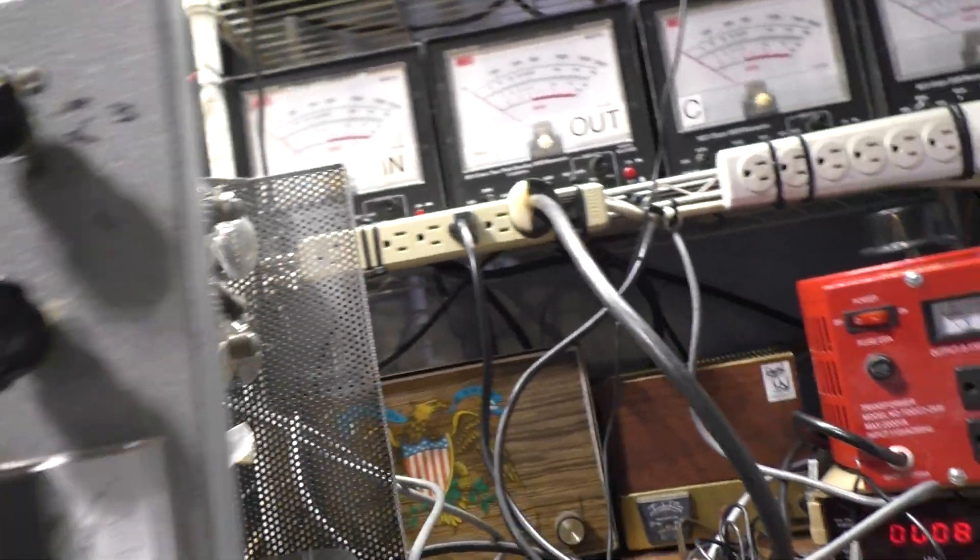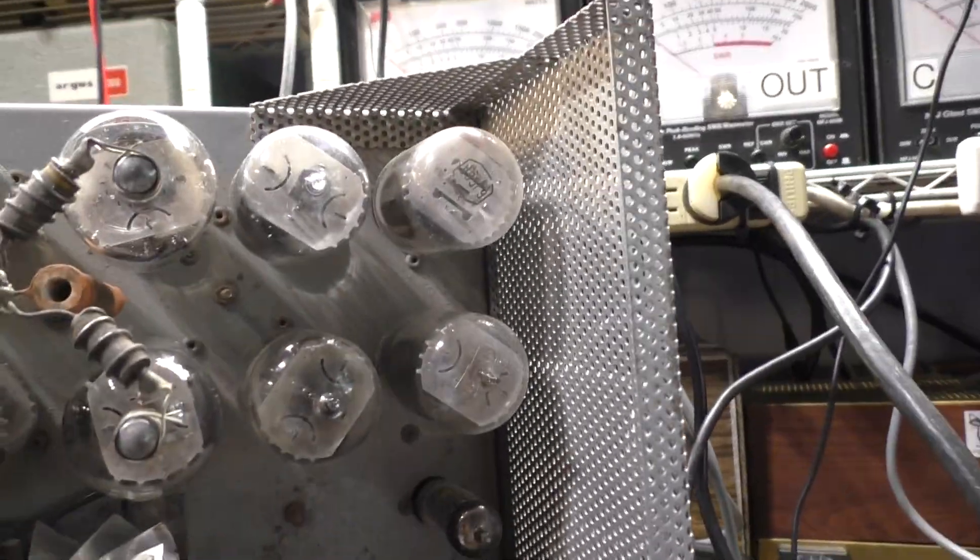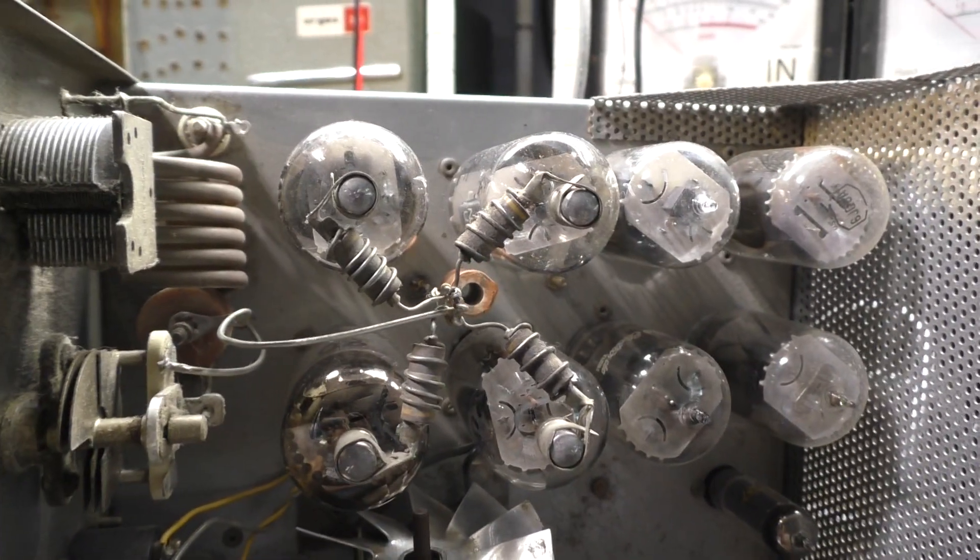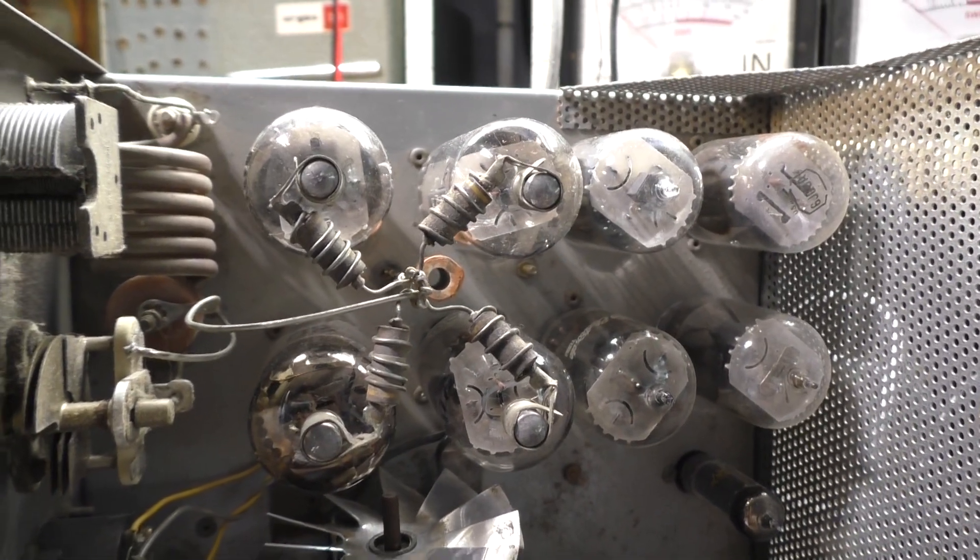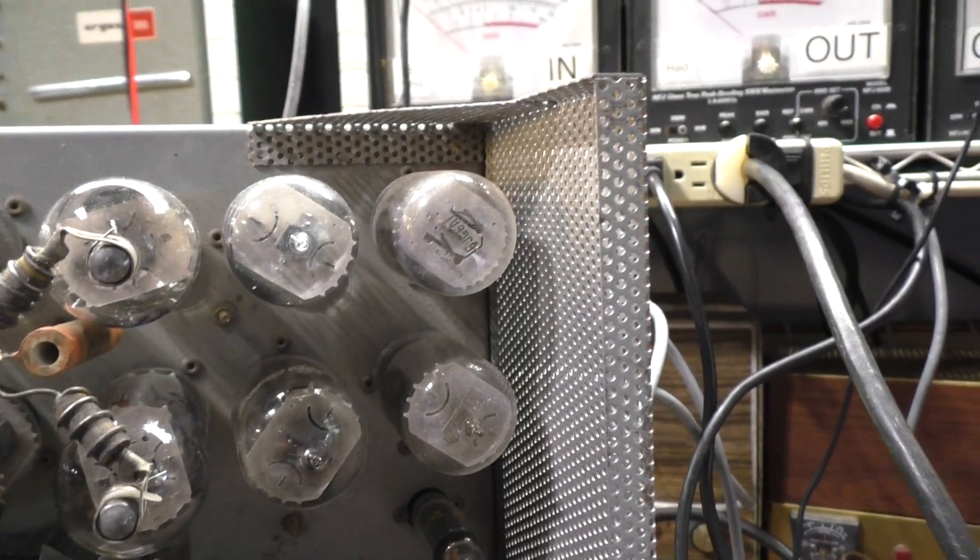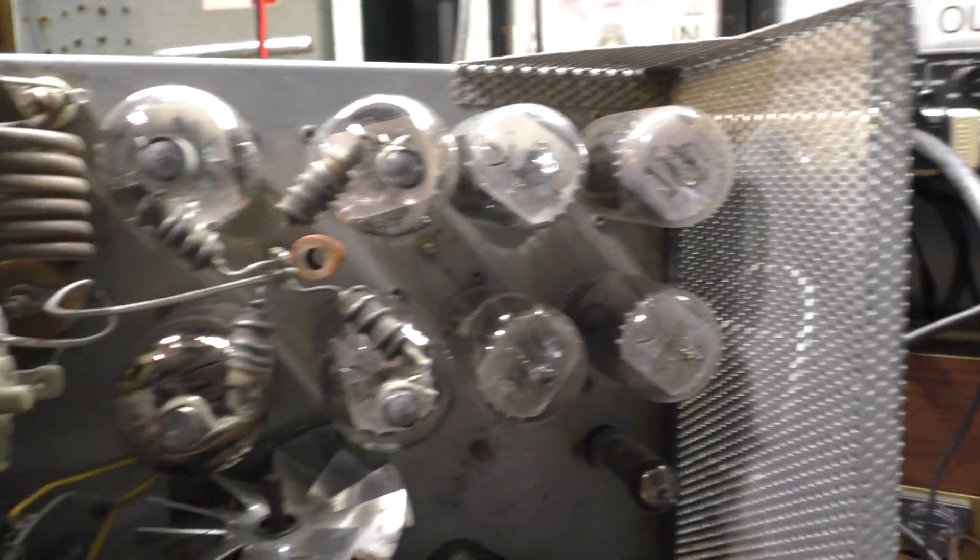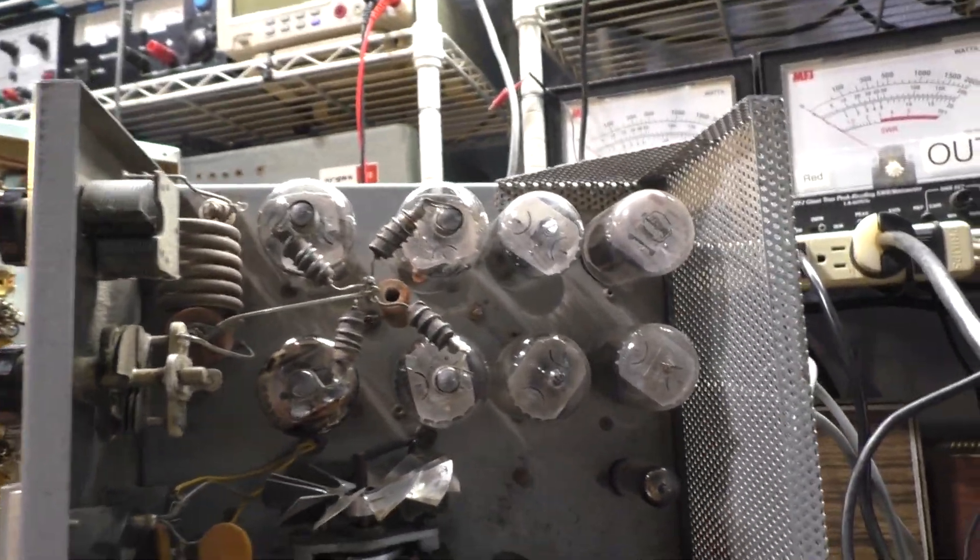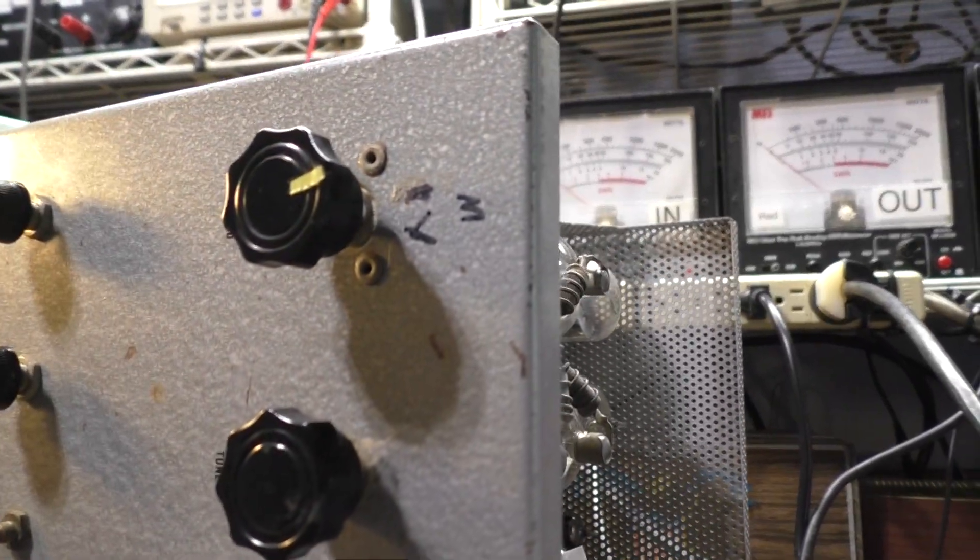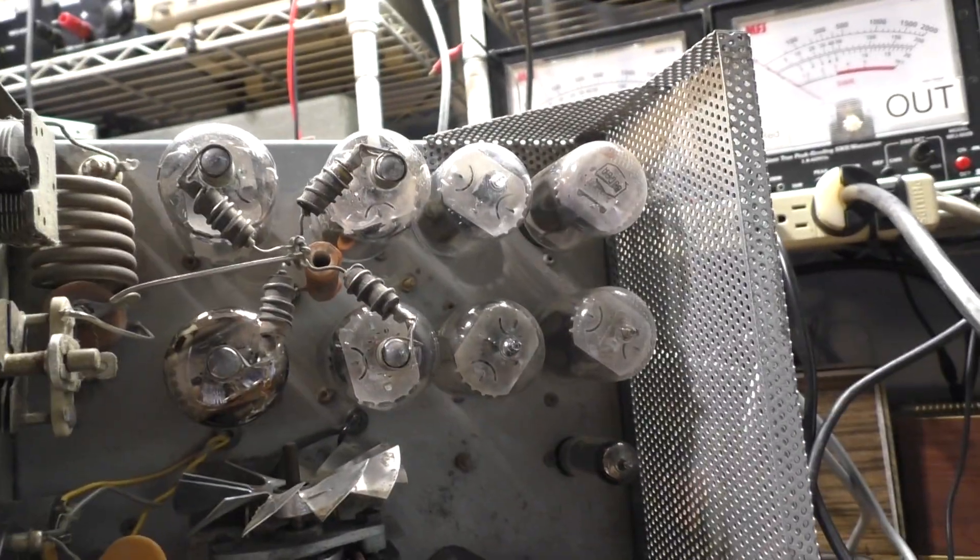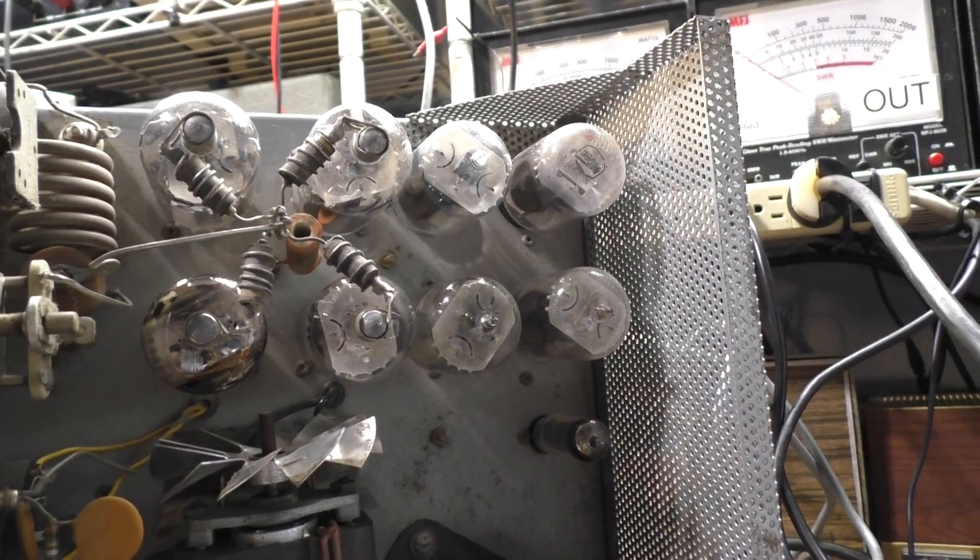How this amp works is you have four small baldies - that's a baldy, no plate on top - driving four of the bigger grounded grid tubes. Four 6GJ, JG6 family driving four 6LQ6 family tubes. So anyway, on the high side the four small ones drive the four big ones.